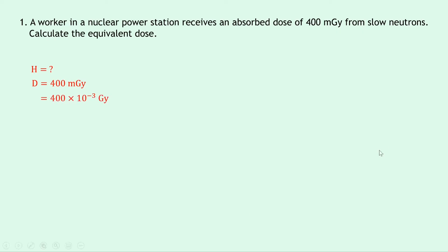So what we have to do is look at the table of radiation weighting factors on the data sheet and from the data sheet we should be able to see that slow neutrons has a radiation weighting factor of 3.